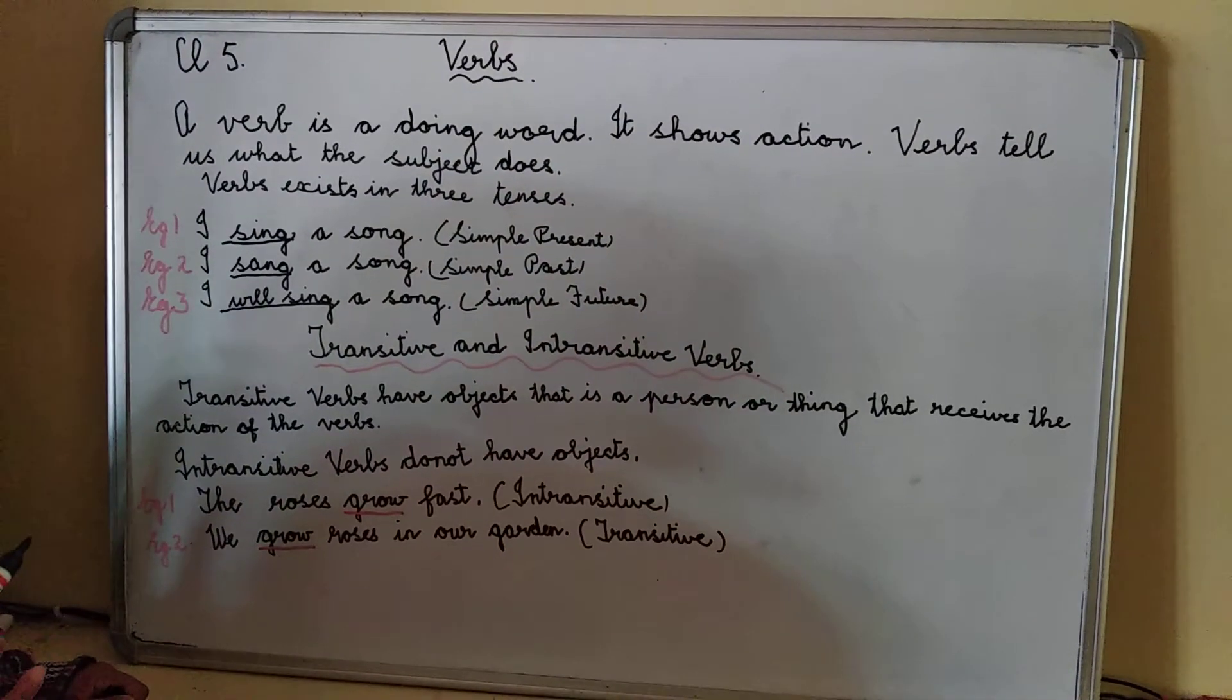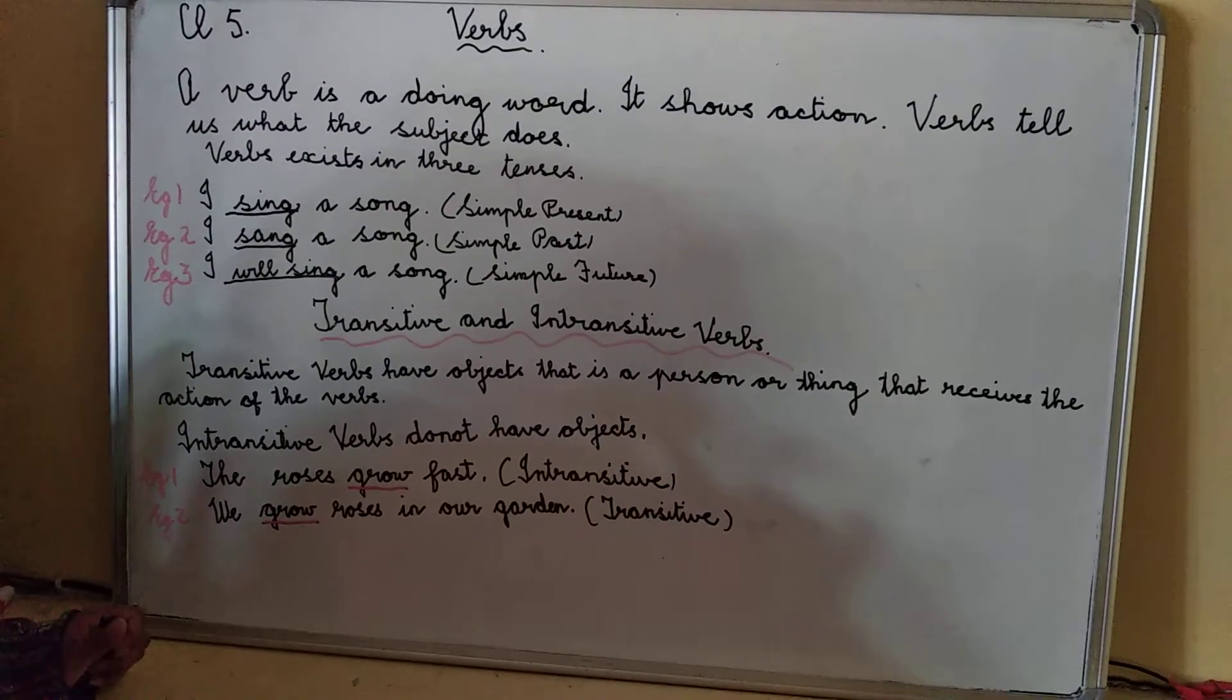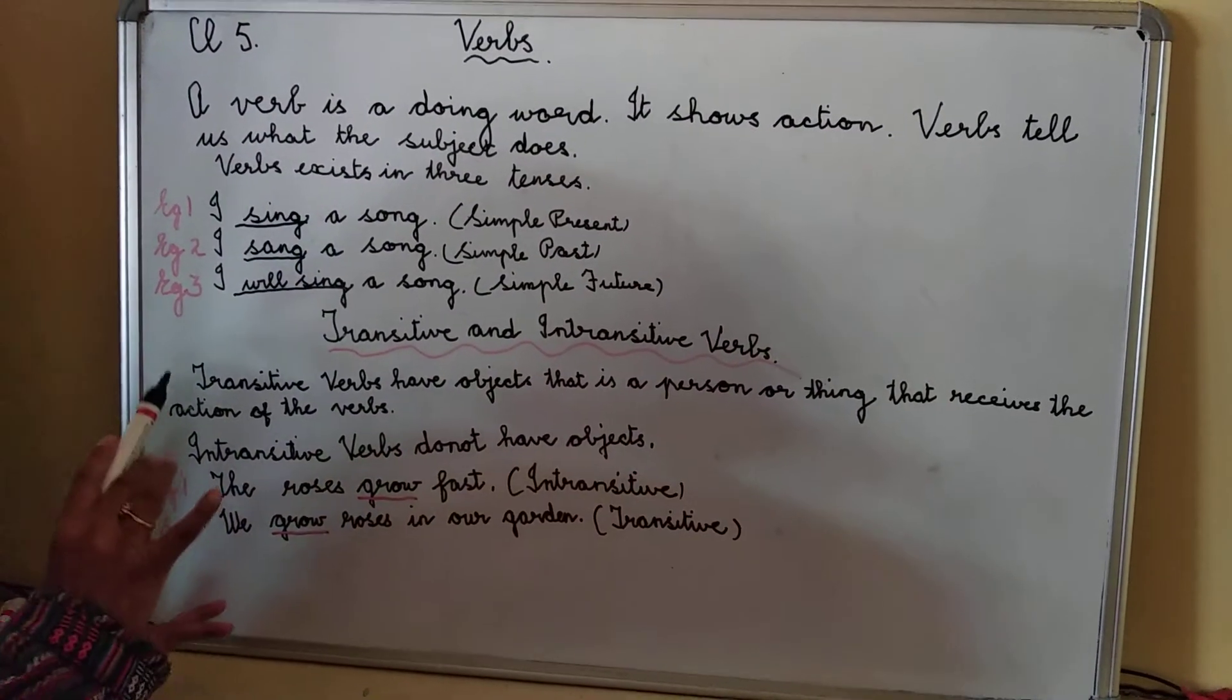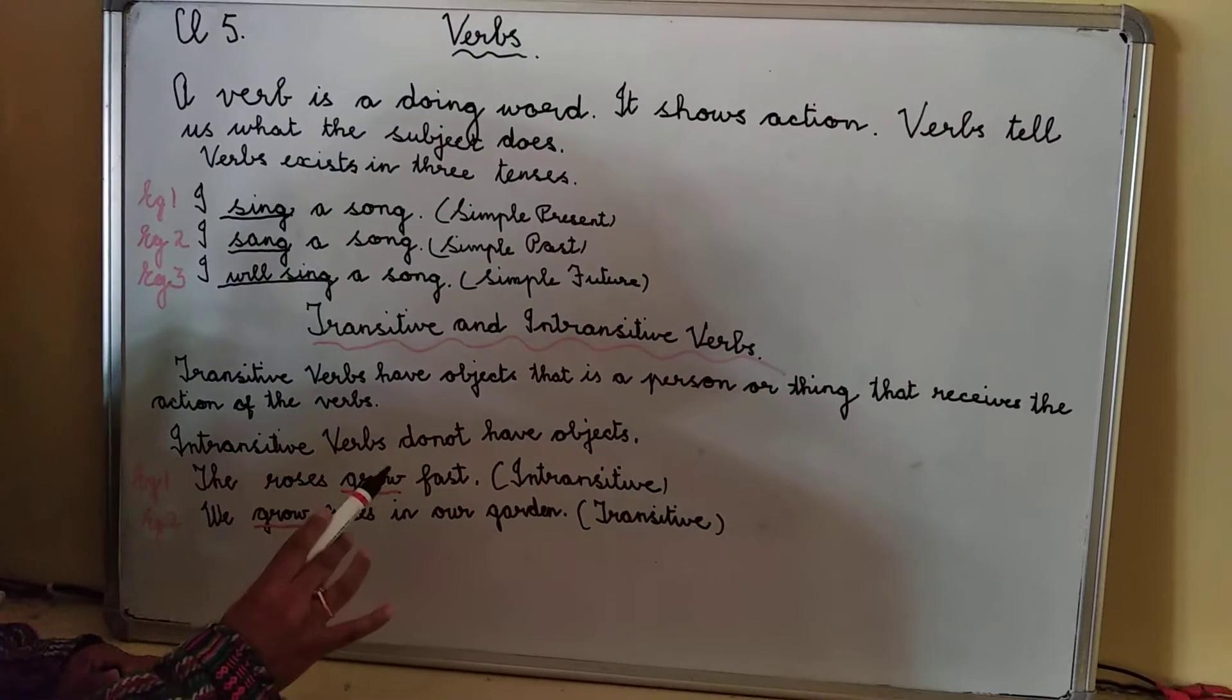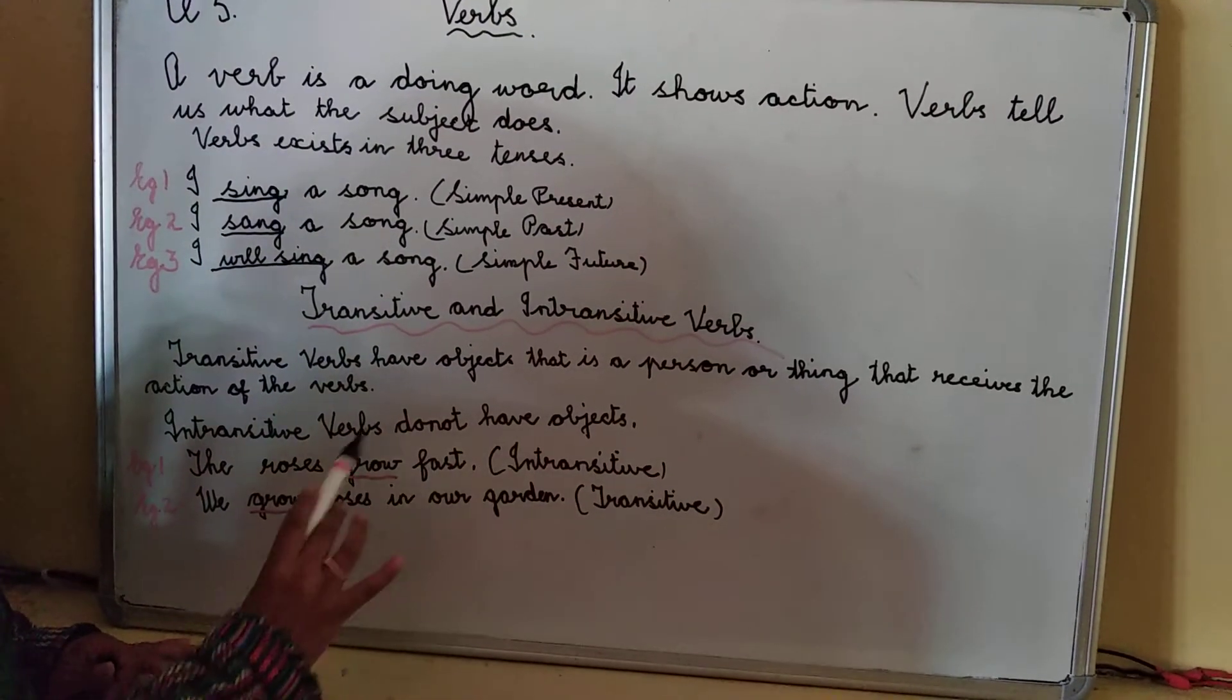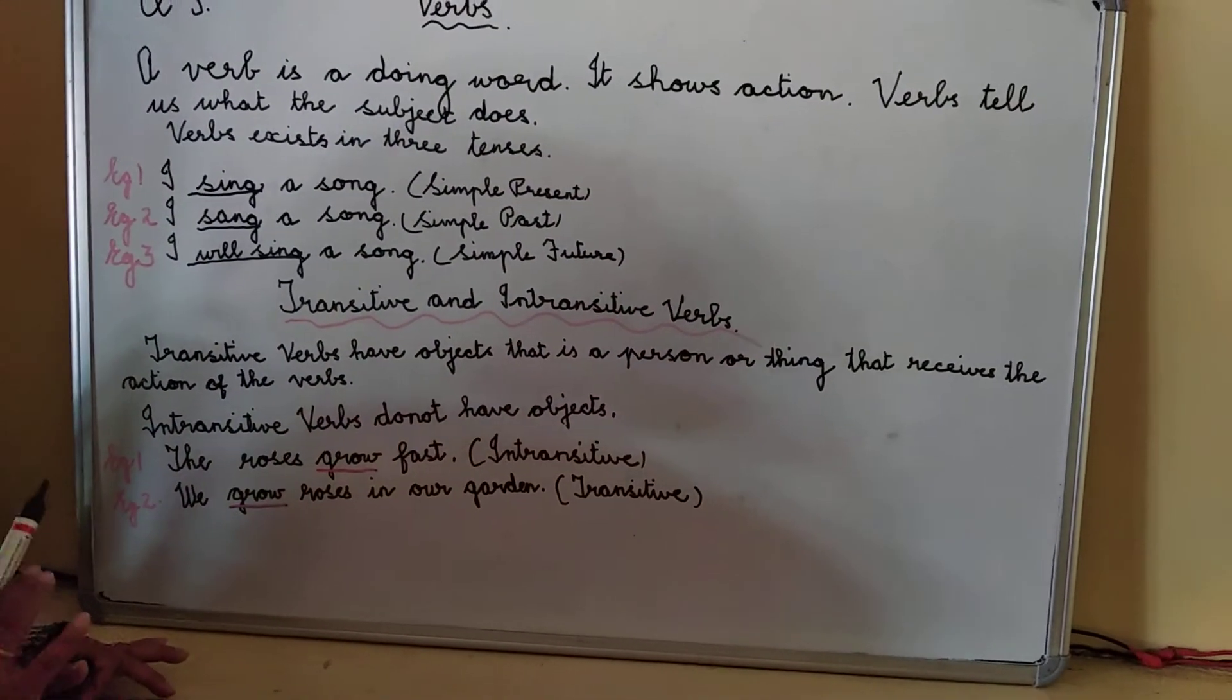An intransitive verb does not have any object. It is complete in itself. Now we can see the examples over here. The roses grow fast. That is intransitive because what is the verb? The verb is grow but it does not have any object.